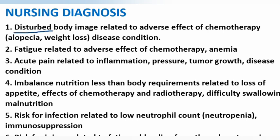Nursing diagnoses: Number 1 - Disturbed body image related to adverse effects of chemotherapy such as alopecia, weight loss, and disease condition. Number 2 - Fatigue related to adverse effects of chemotherapy and anemia. Number 3 - Acute pain related to inflammation, pressure, tumor growth, and disease condition.